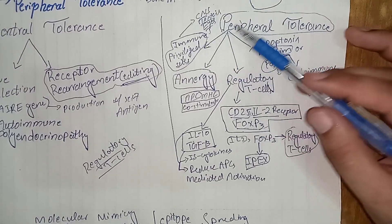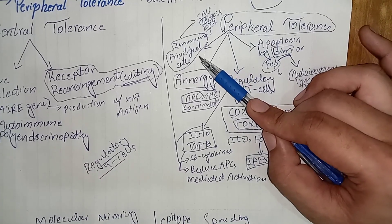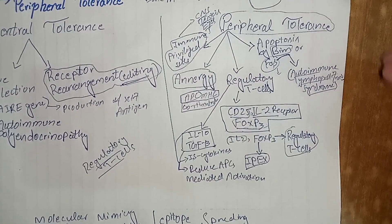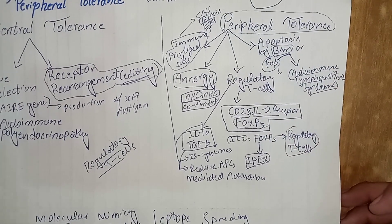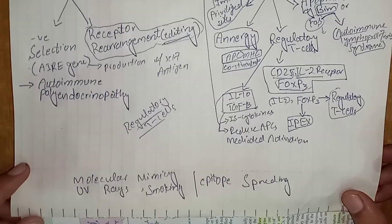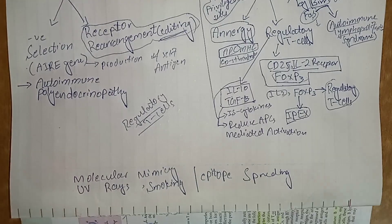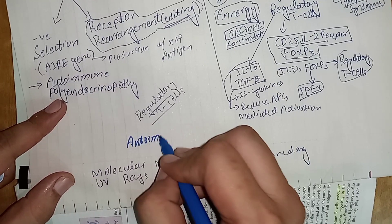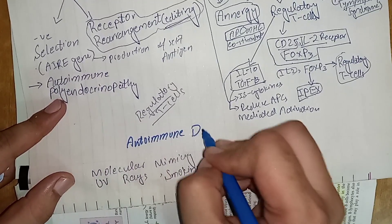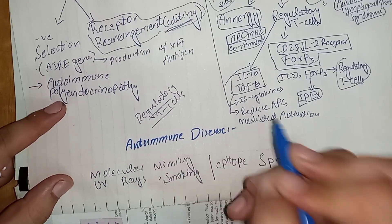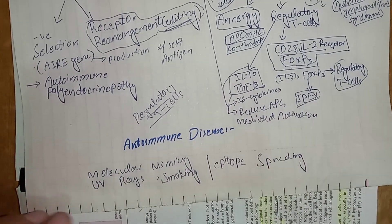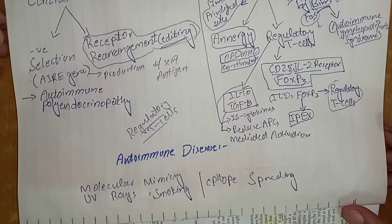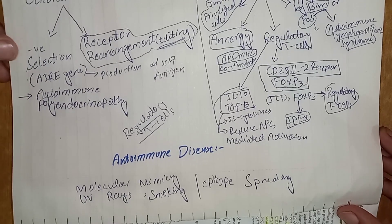To summarize, the mechanisms of peripheral tolerance include: hidden status of some self-antigens in immune privileged sites, anergy, regulatory T cells, and apoptosis via BIM or FAS receptor pathways. The principal requirement for an autoimmune disease to develop is a breakdown of central or peripheral tolerance, allowing autoreactive T or B cells to damage normal body tissues.